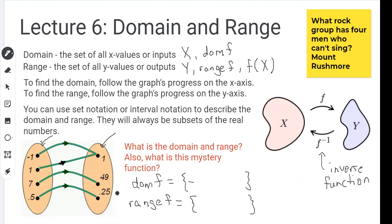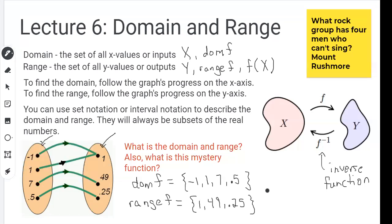The domain contains negative one, one, seven, and 0.5 — that's all the X values. And then the range is going to be all the Y values, so we use all the elements from the output bubble: 1, 49, and 0.25. Those are all the Y values.